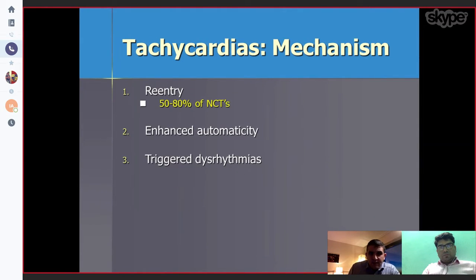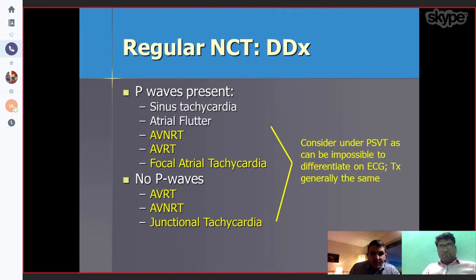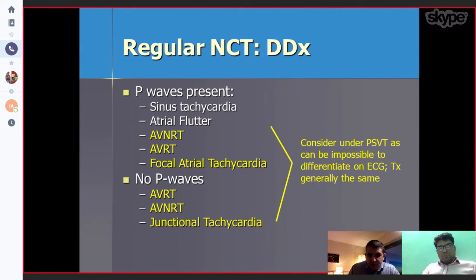Looking at the mechanism of tachycardia, the main mechanisms are re-entry — in most cases — enhanced automaticity, and triggered dysrhythmia. In the differential diagnosis of narrow complex tachycardia, if there is a P-wave present, think of sinus tachycardia, atrial flutter, AVNRT, AVRT, or focal atrial tachycardia. If you don't see any P-waves, think of AVRT, AVNRT, and junctional tachycardia.